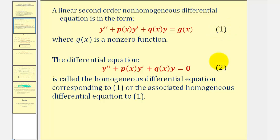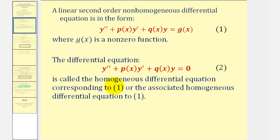Taking a look at equation two, notice how the right side of the equation is equal to zero and the left side fits the same form. Because the right side is equal to zero, this is a homogeneous differential equation, and we call equation two the homogeneous differential equation corresponding to equation one, or the associated homogeneous differential equation to equation one.